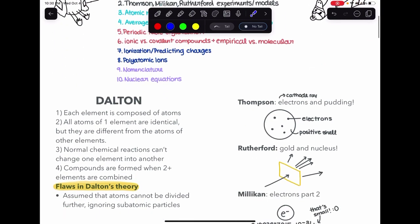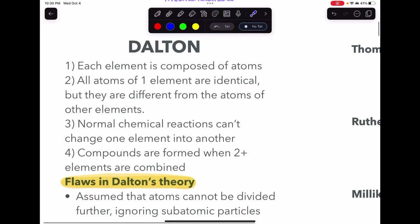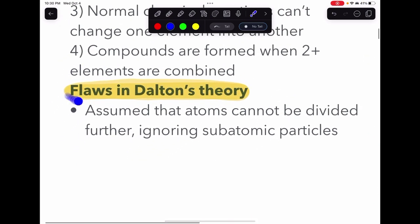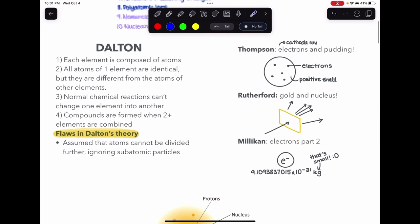So let's get into talking about Dalton's atomic theory. Now there are four main components of it, but I just want to highlight that the flaw in Dalton's theory is that he assumed that atoms cannot be divided further. He failed to account for subatomic particles that actually make up the atom, so he didn't know that yet.